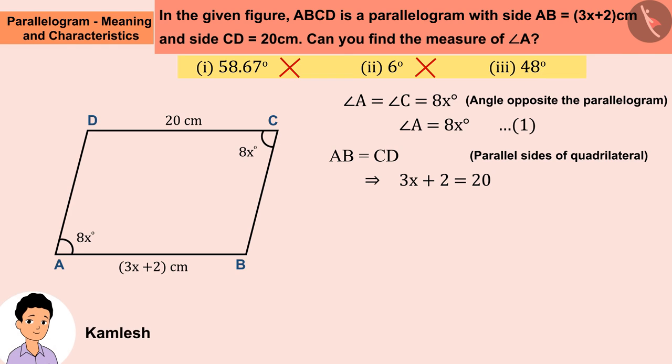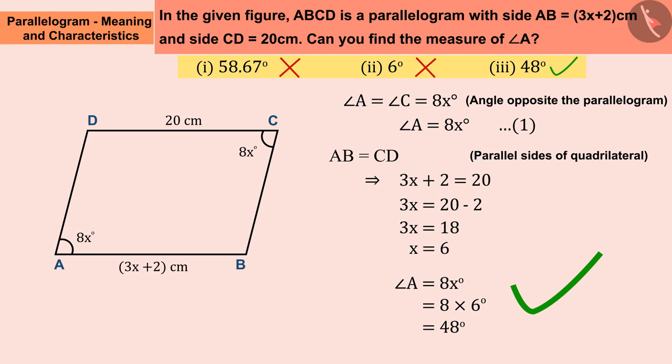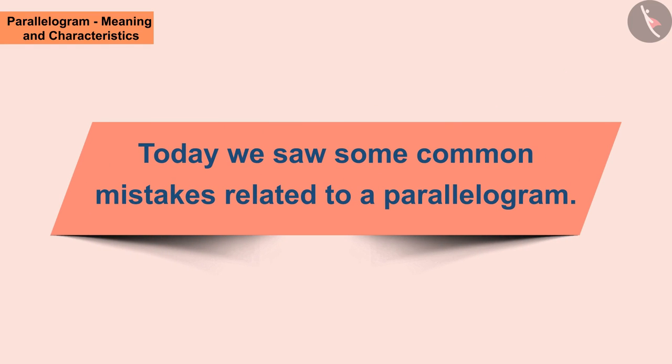Kamlesh tried to calculate the angle A in this way. Solving the equation, Kamlesh gets a value of X as 6. The value of angle A is 8X degrees, in which he substitutes the value of X and gets the value of angle A as 48 degrees. This is the correct answer. We can say that Kamlesh has given the correct answer and won the lottery competition. Today we saw some common mistakes related to a parallelogram.